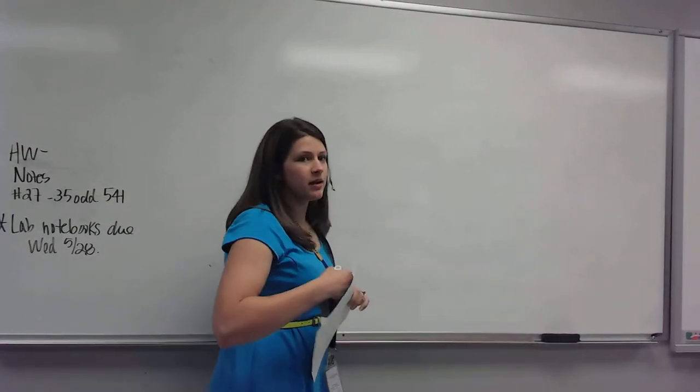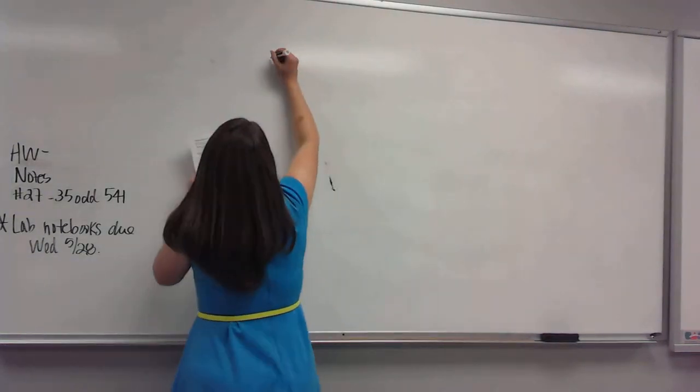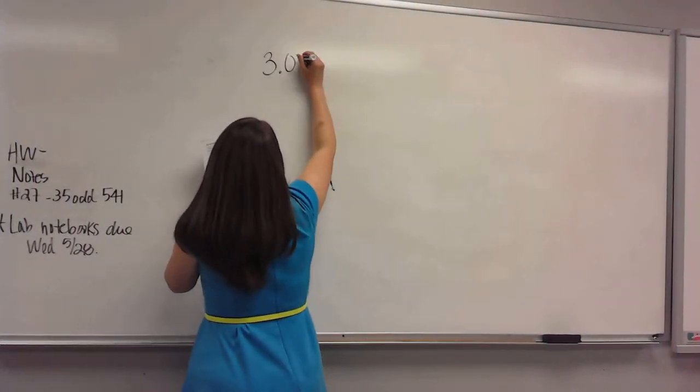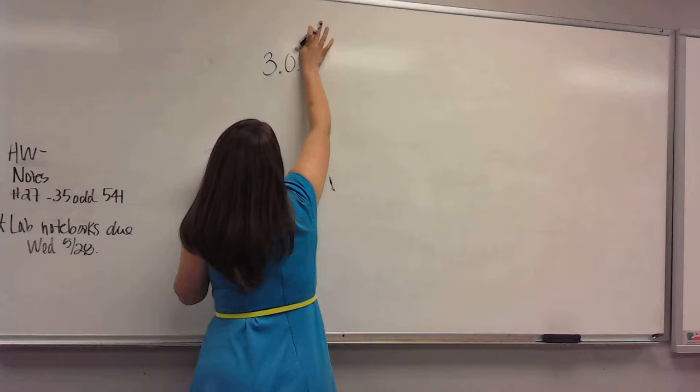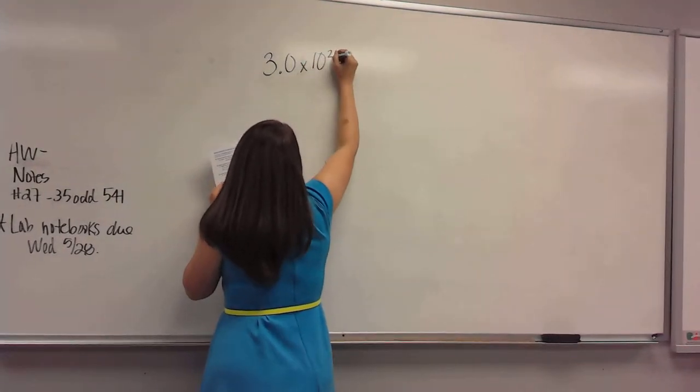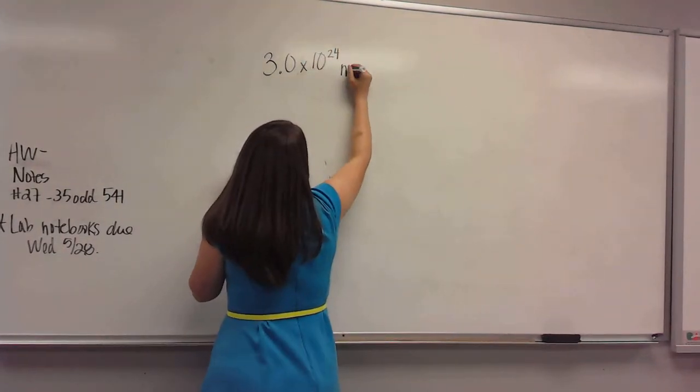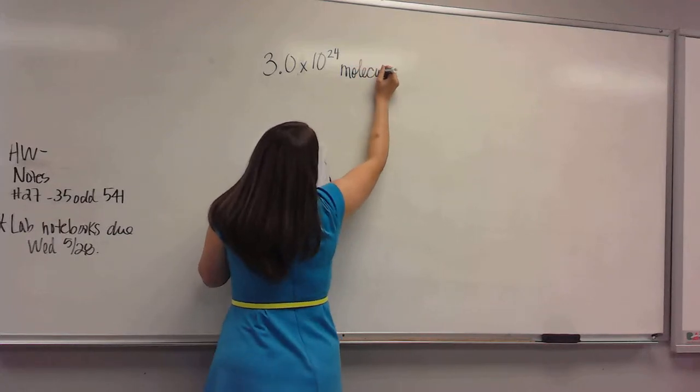So remember, anytime we have something like this, we just write out what's given, which is 3.0 times 10 to the 24 molecules. Write the number and the unit.